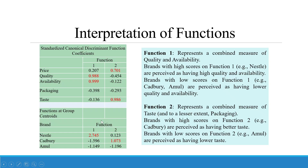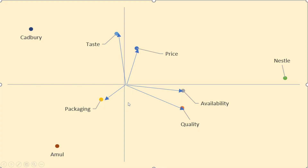These are the values of standardized canonical discriminant function coefficients: Function 1 and Function 2. Functions at group centroids show Function 1 and Function 2. Pick up the maximum value in Function 1 — it is quality and availability. In Function 2 it is price and taste. Looking at the chart, availability and quality appear along one axis, which becomes Function 1, and another axis becomes Function 2.